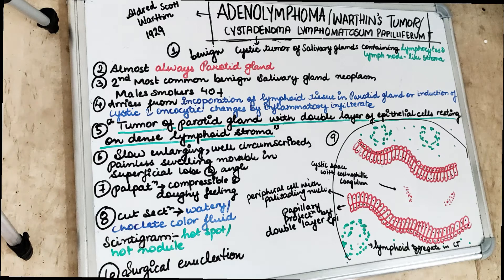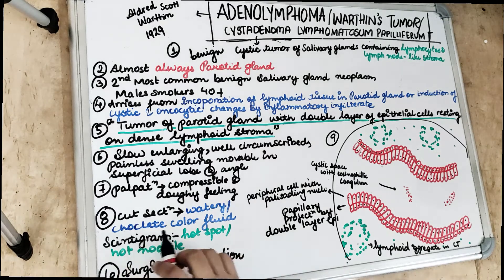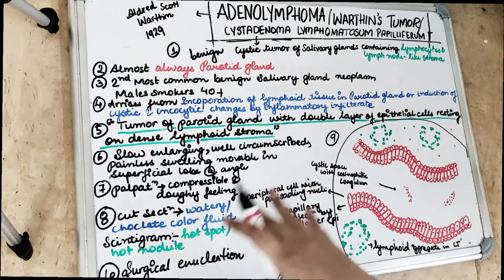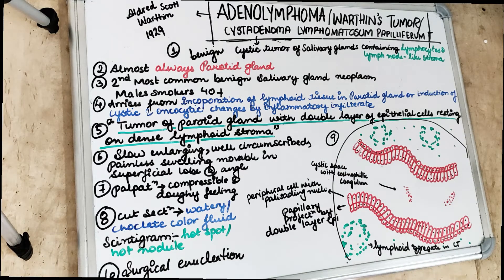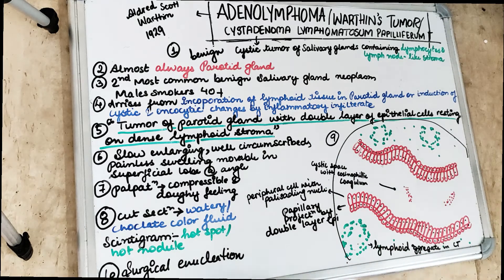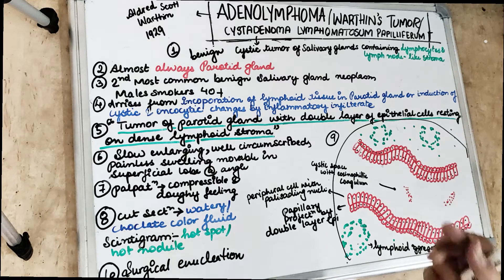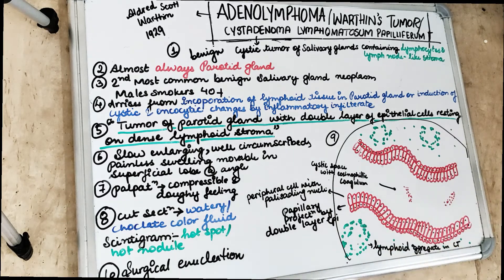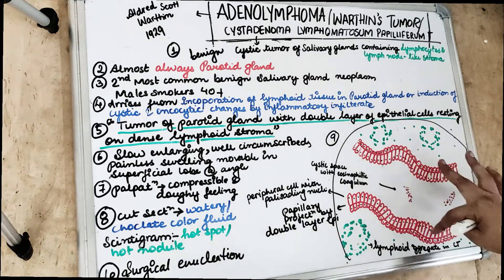On cross section, the exudate that comes out is either watery or a chocolate-colored fluid, because there are lymphocyte aggregates in the connective tissue stroma and multiple cystic spaces with lymphoid tissue. On scintigraphy, it will show a hot spot or hot nodule. Histologically, we will see papillary projections of the double layer of epithelium — epithelial cells on both sides — and a peripheral cell with a palisading nucleus between both layers.